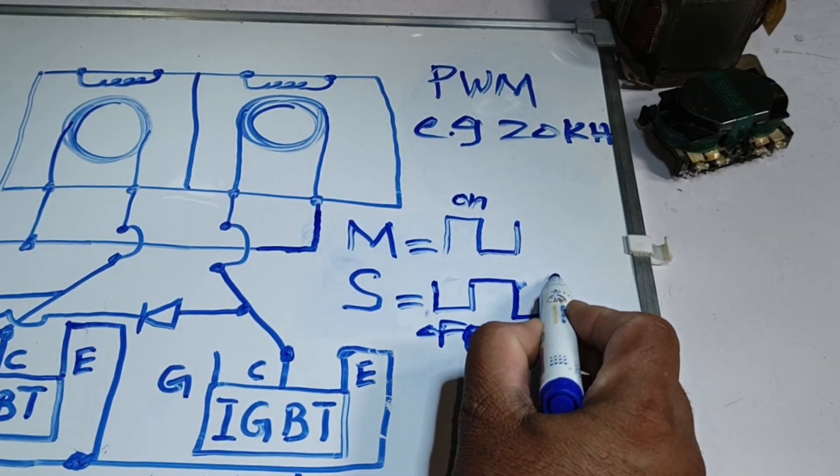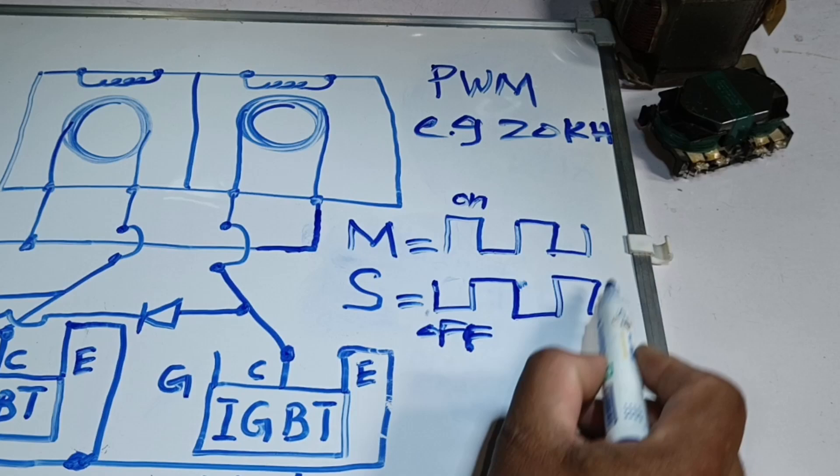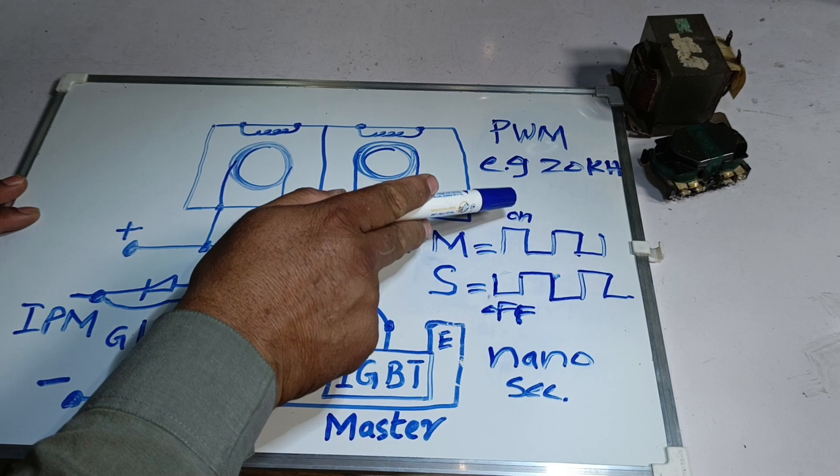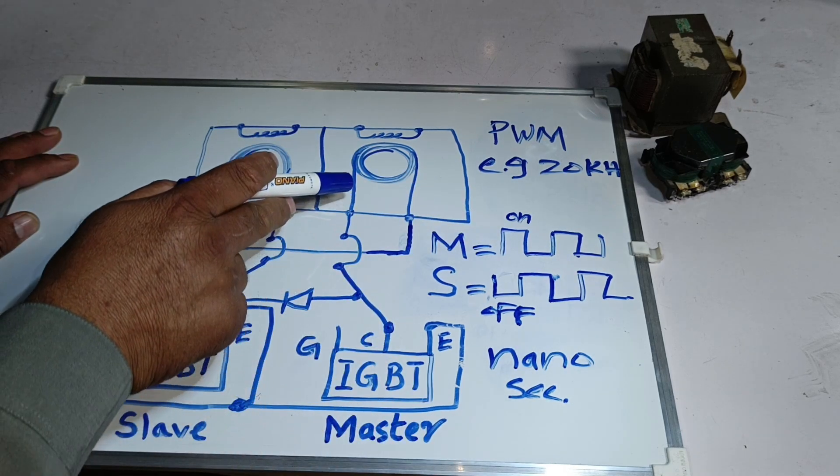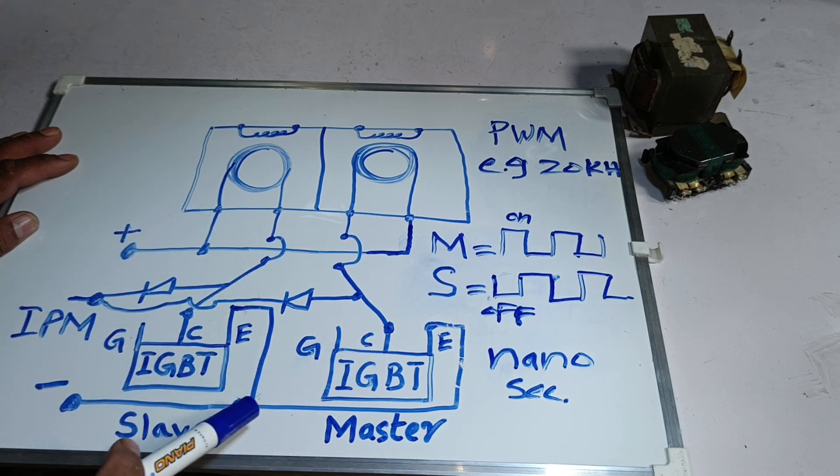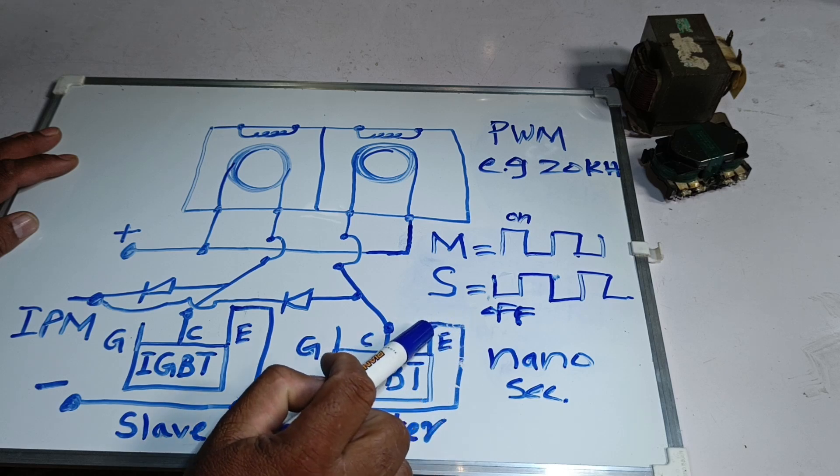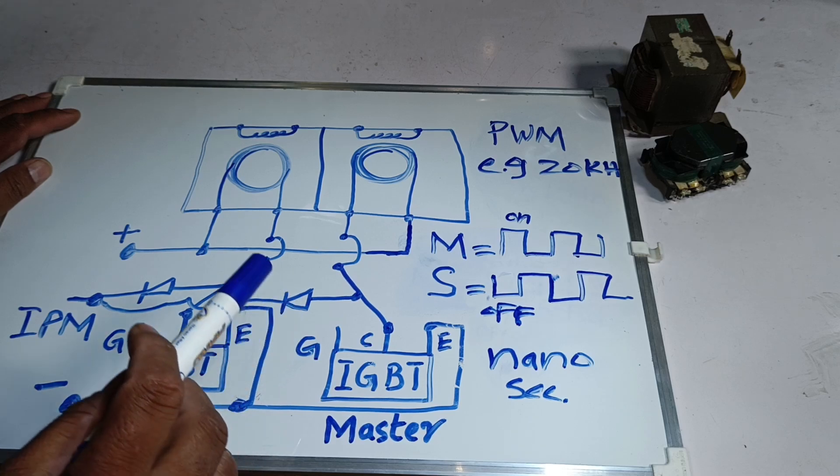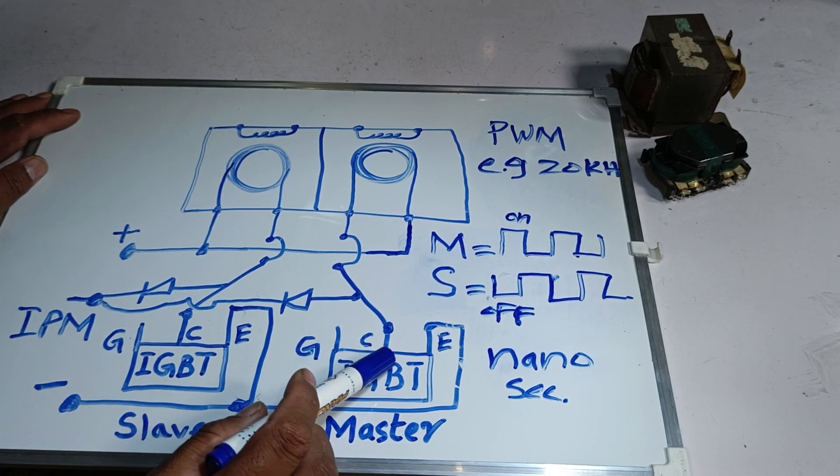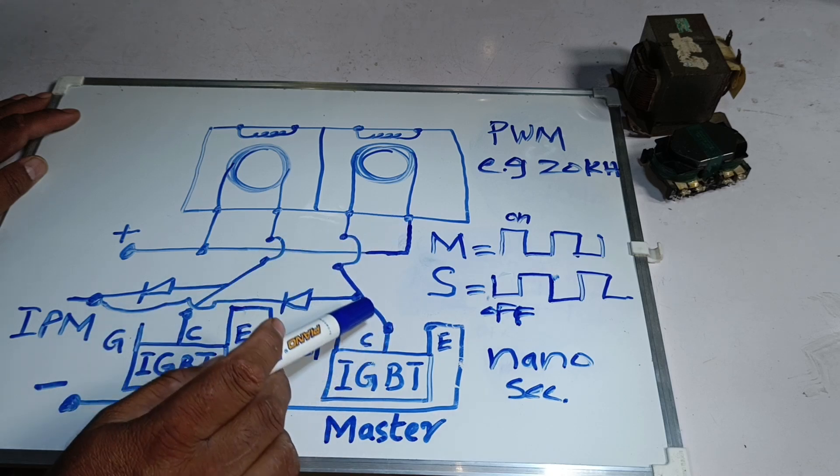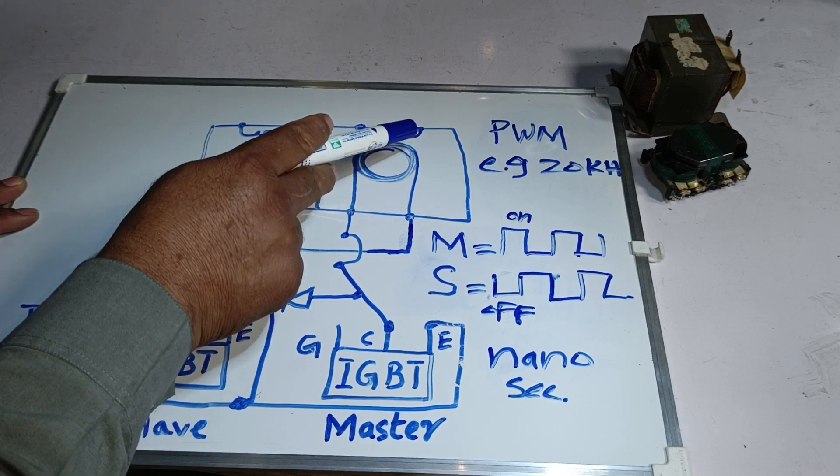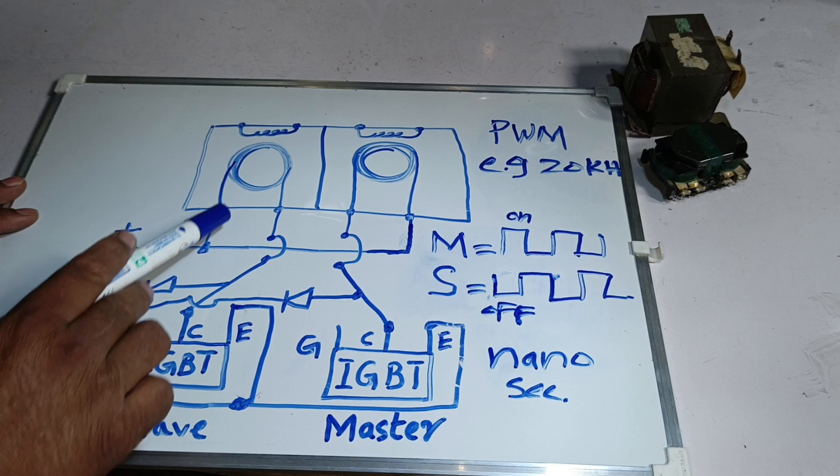Subsequently, the slave will turn off, and the master will turn on. This on-off cycle will continue in this manner, with the difference in their on-off timings being in nanoseconds. When this signal turns on, this will be the moment when the reactor gets charged. Let me also explain how it charges. When the gate of the IGBT is turned on, the emitter is at a lower potential, typically ground or negative voltage, and the collector is at a higher positive voltage. When the gate is triggered, with the appropriate voltage exceeding the threshold, the IGBT allows current to flow from the collector to the emitter.